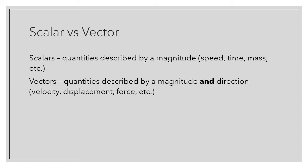In physics, the words scalars and vectors always come up. A scalar is a quantity described by a magnitude only — such as speed, time, mass, etc. For example, a car going at 45 kilometers per hour, something taking 15 seconds, or a mass of 51 kilograms — these are all classified as scalars.